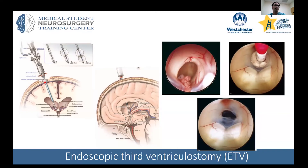The procedure — Endoscopic Third Ventriculostomy, or ETV — involves a burr hole, opening the bone, and passing an endoscope, which is a camera with a light, into the ventricle. You go through the lateral ventricle, through the foramen of Monroe, into the third ventricle. Then a balloon-tipped catheter — essentially similar to a Foley — is passed and expanded to perforate the floor of the third ventricle, creating a new channel for CSF to drain within the body. It's a beautiful surgery where you can see all the anatomy clearly.